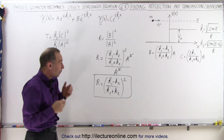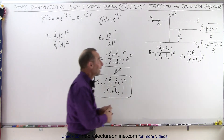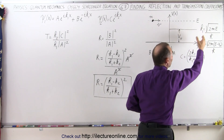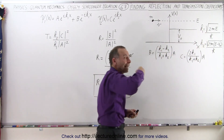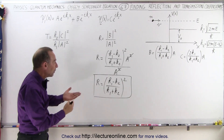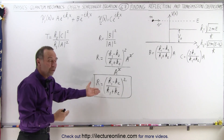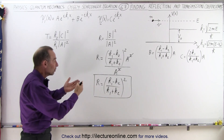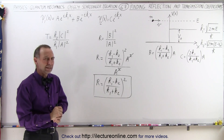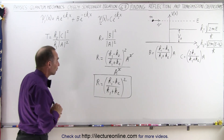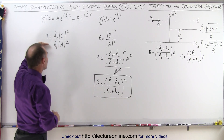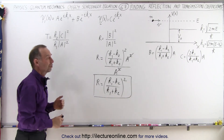We could also replace K1 and K2 with expressions for the energy of the particle and the potential of the step, giving the reflection coefficient in terms of energy and the step potential — something to address in a future video. Now we turn to finding the transmission coefficient.